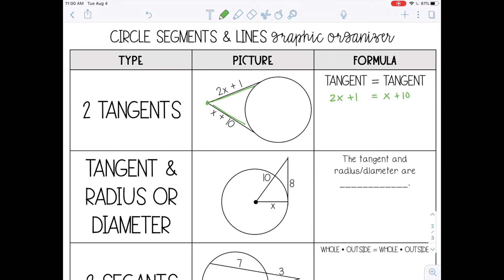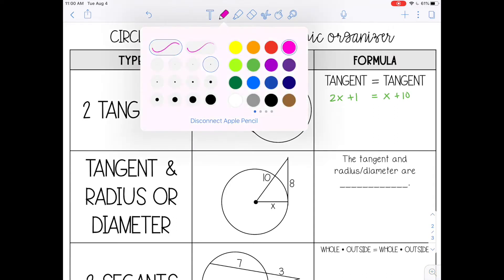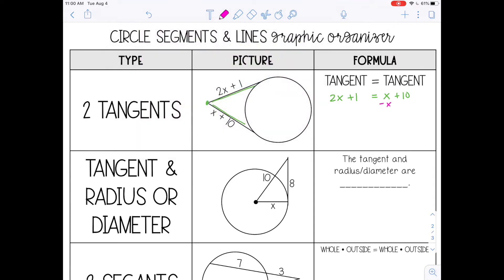And then you can solve the equation for x. So I'm going to subtract x from both sides. Subtract 1 from both sides. So x equals 9. And then if you want to find the actual links of the segments, you can substitute 9 in for x. So let's see, 2 times 9 plus 1, that would be 18 plus 1, which is 19. And this one has to be the same because they're equal, so they're both 19.